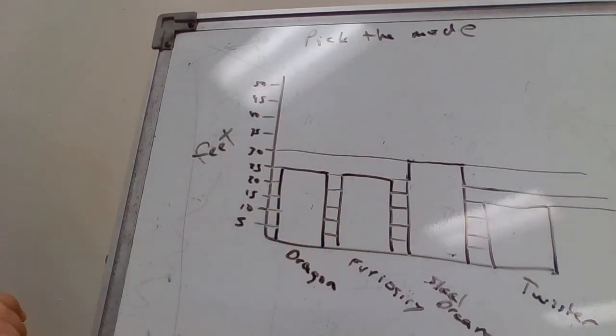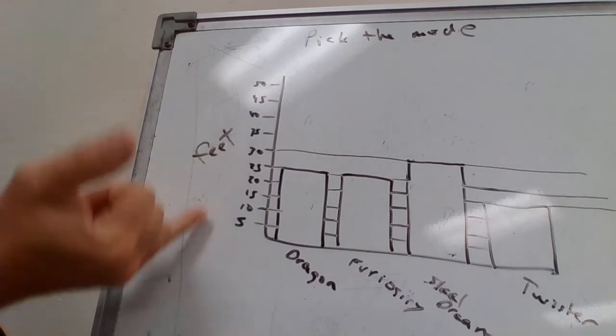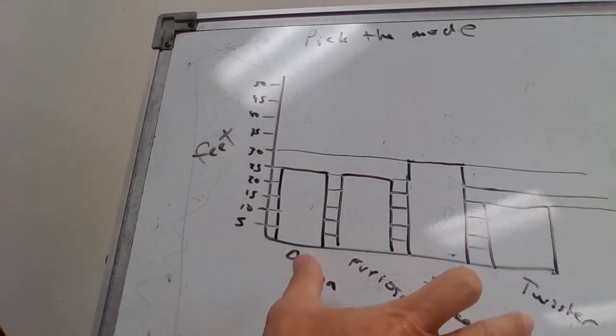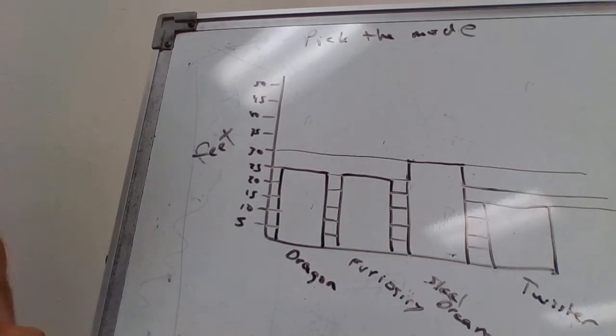We can tell by the chart - here's your y-axis which is the feet. The x-axis is the name of the roller coasters and the height. They're talking about picking the mode here.